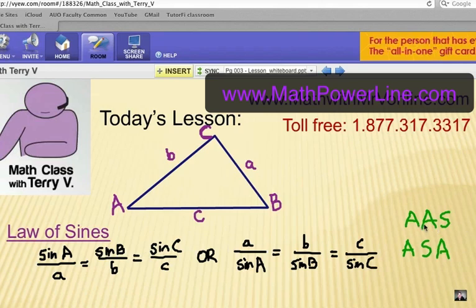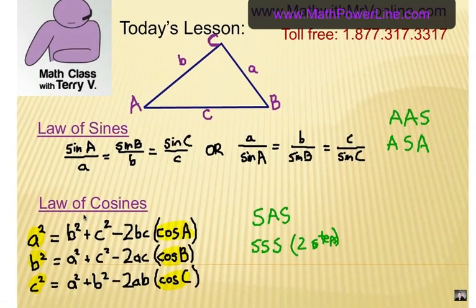That's when you're given two angles and a non-included side or an included side. So you have to look for those situations. In our next video, we'll go over the Law of Cosines, which is for different situations. But I'm going to have you try two problems. Get your calculators ready, get a piece of paper, and let's have you try them.